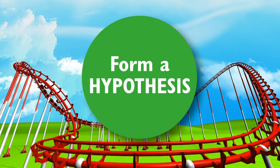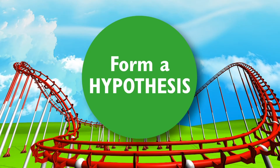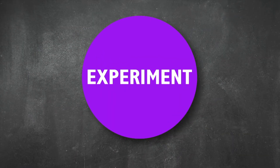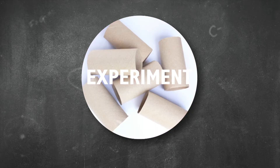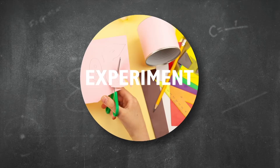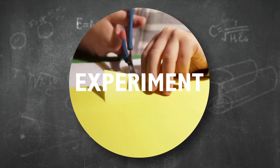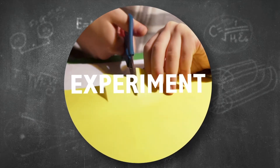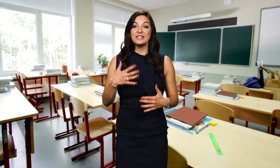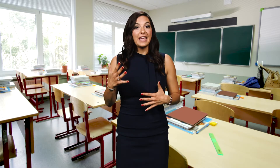Step two is to come up with a hypothesis — an educated guess of what the answer to your question is. Step three is to experiment. You'll use some common household items to build and test your design. Build the coaster you imagine out of these materials, and then let the marble test it out. Like any good roller coaster genius, you have to keep revising your experiment — keep trying things until it works.